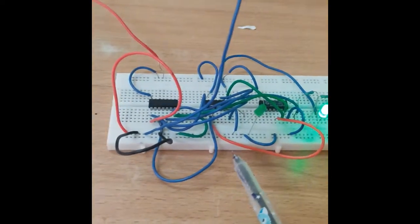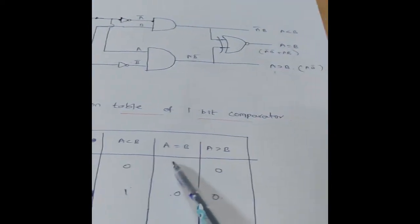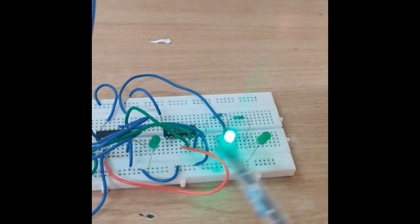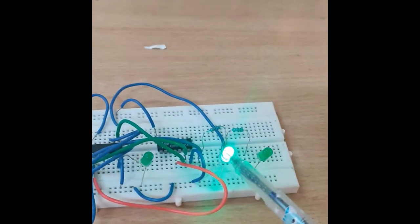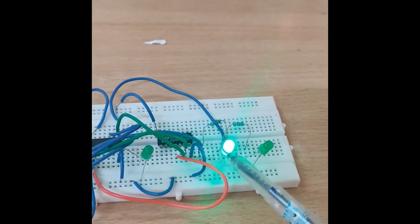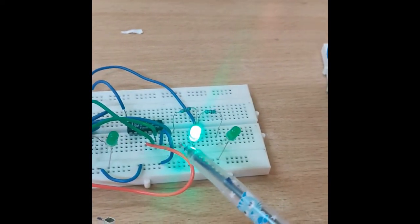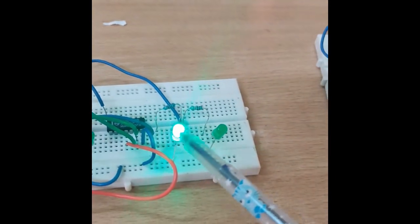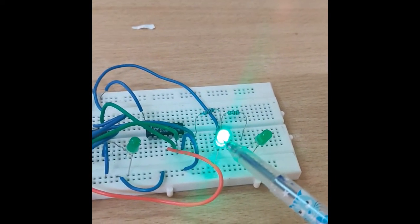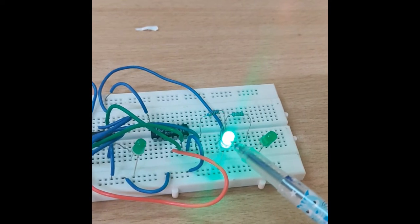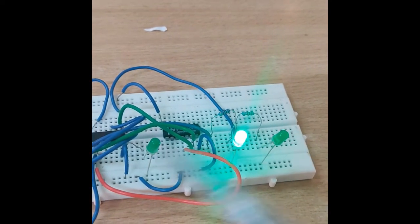First combination — inputs are zero zero. Here A equal to B is one. In our circuit diagram, the middle LED is the A equal to B output, and that LED is on, meaning one. The remaining outputs are zero — verified.